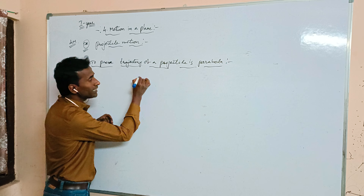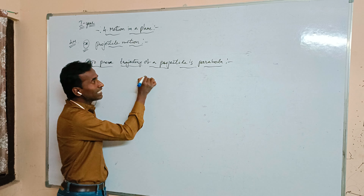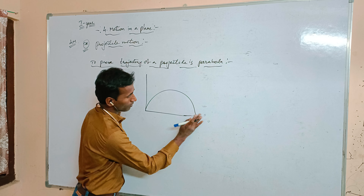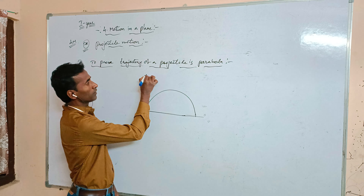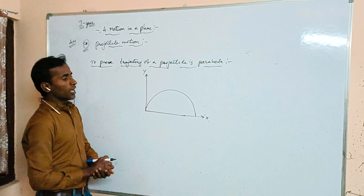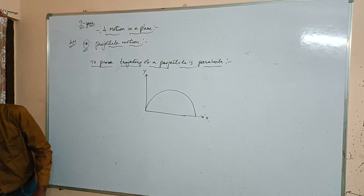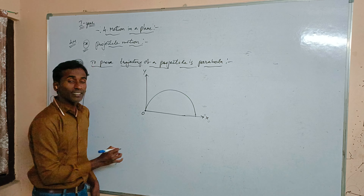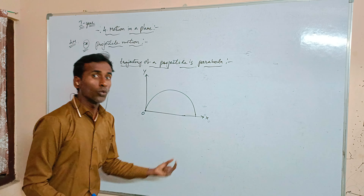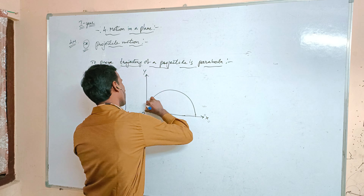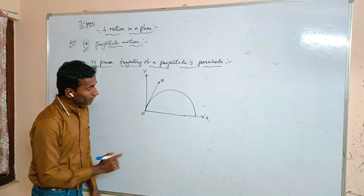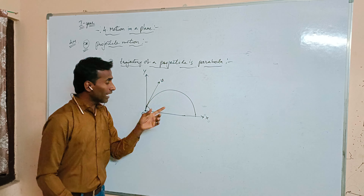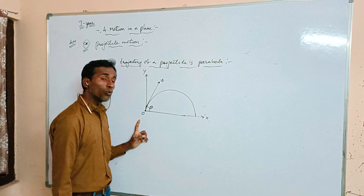Let us consider we are taking one object. That object is thrown with initial velocity u. This is the point O, where O is the point of projection. When we are throwing one object upward with an angle theta, where theta is the angle of projection and O is the point of projection.